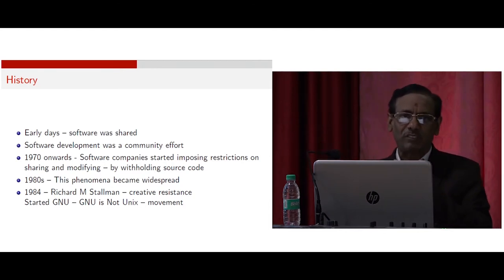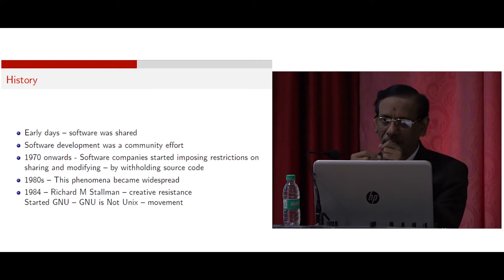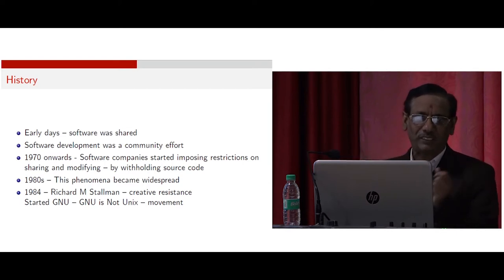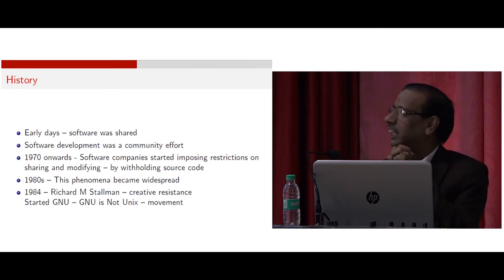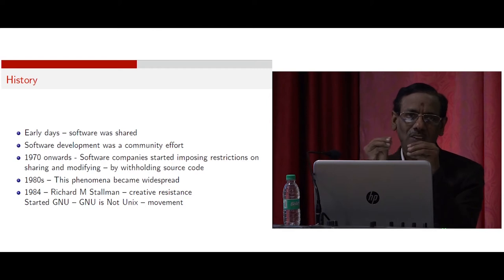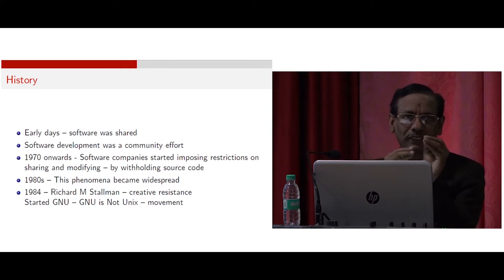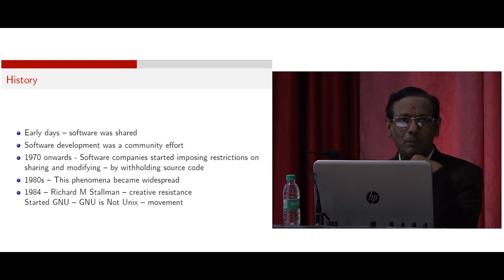Till that time, software development was a community effort because there were not many computers. There were no computer experts — only mathematicians, physicists, and similar people used these computers. They used to write their own operating system instructions and programs. But by the 1970s, the number of computers increased, and businessmen saw an opportunity to earn money by selling software. So they imposed restrictions on using their computers, saying you cannot distribute the programs you create — it is restricted to you only. By the 1980s, this phenomenon became widespread because the number of computers increased very much.